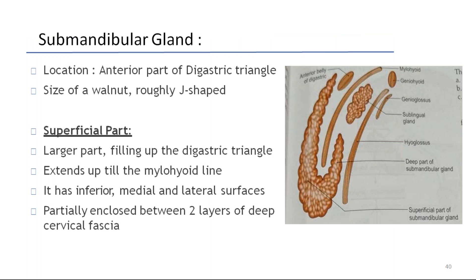Coming to the submandibular gland: this is the submandibular gland — J-shaped, located in the anterior part of the digastric triangle, the size of a walnut. The superficial part is the large part, filling the digastric triangle, extends up to the mylohyoid line. It has inferior, medial, and lateral surfaces, partially enclosed between two layers of deep cervical fascia.